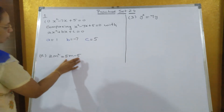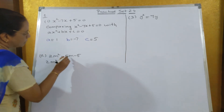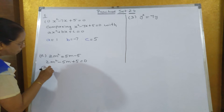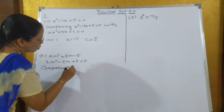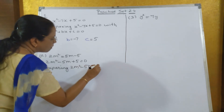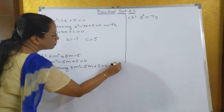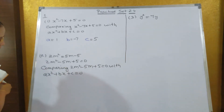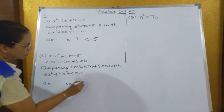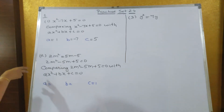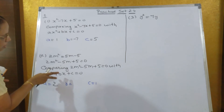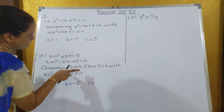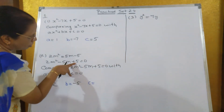Same way. Now, first bring all terms to one side. What you will get? 2m² — 5m will become minus 5m, minus 5 will become plus 5, equal to 0. So comparing 2m² - 5m + 5 = 0 with Ax² + Bx + C = 0, A is equal to 2, B is equal to minus 5, and C is equal to 5.